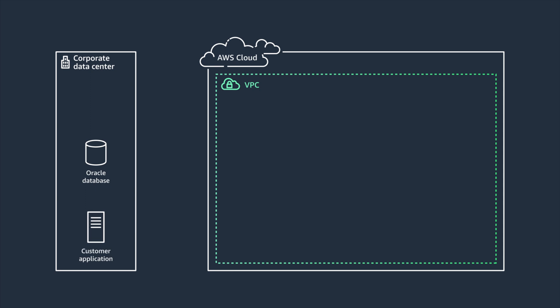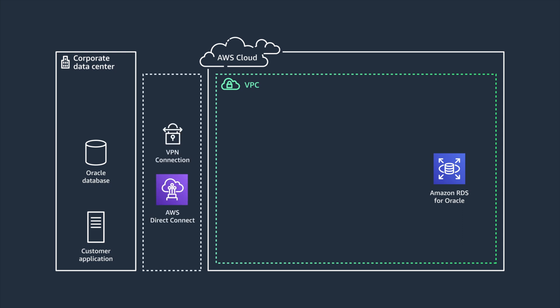Re-platforming, also referred to as lift and reshape, involves migrating an application and database to cloud while introducing some level of cloud capability optimization. An example of this is migrating your on-prem Oracle database to Amazon RDS for Oracle in AWS Cloud. Your application and Oracle database reside in a corporate data center. You will have to configure the network connectivity to allow migration traffic between your corporate data center and AWS Cloud.